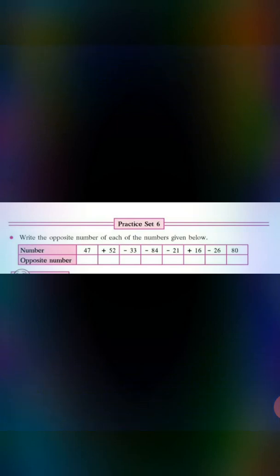Practice set 6. Write the opposite number of each of the numbers given below. So you can see the table. Numbers are given and you have to write only the opposite numbers. I am sure this is very easy for you. So let's begin.